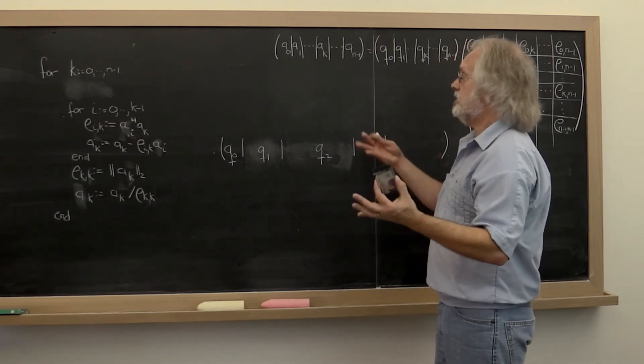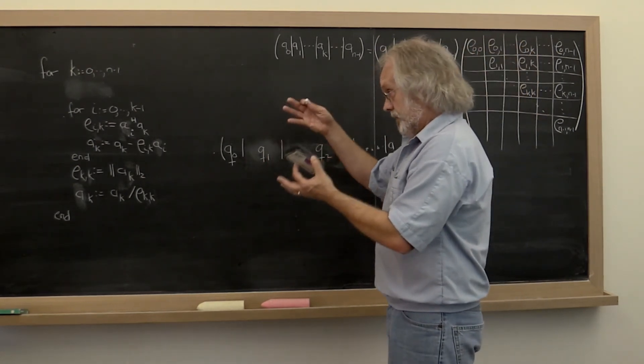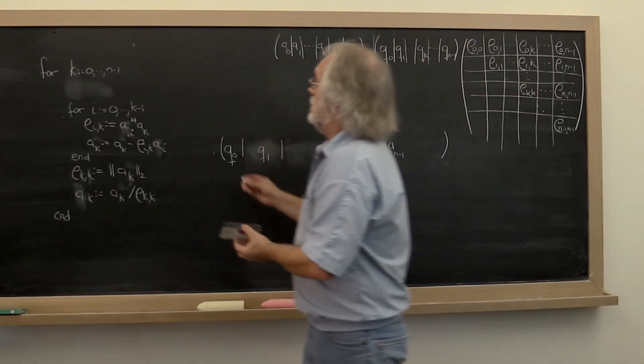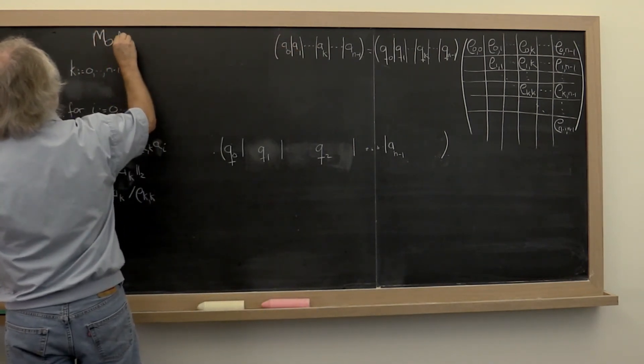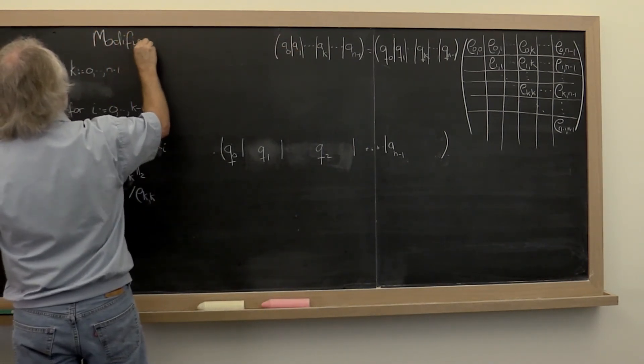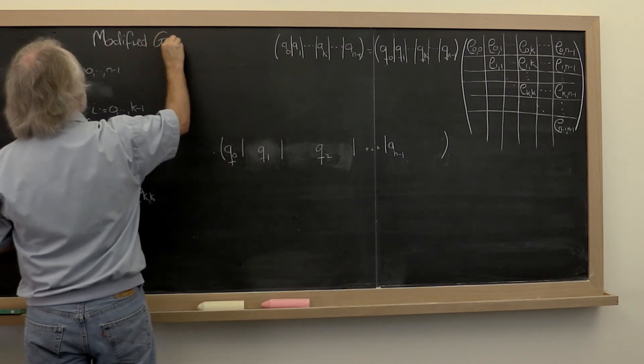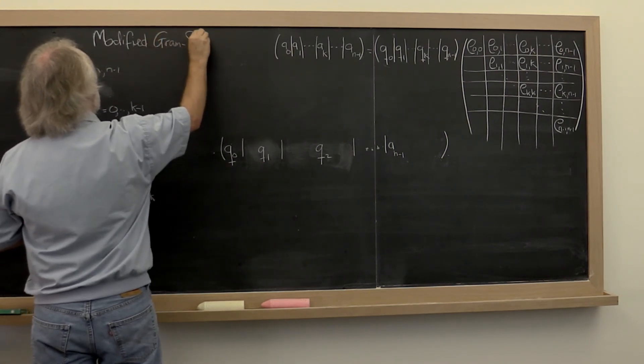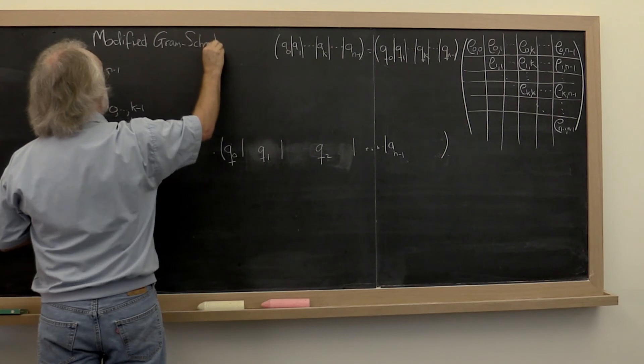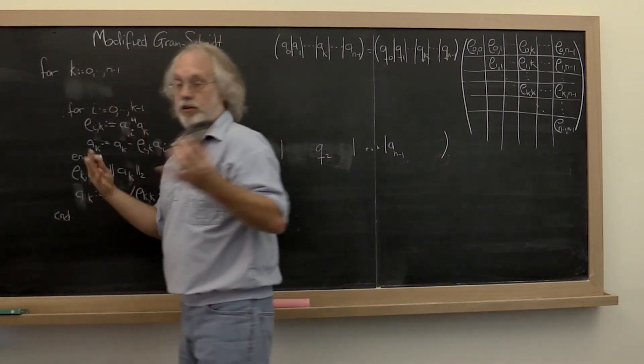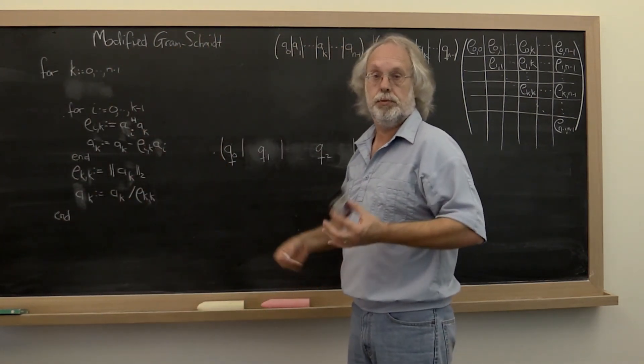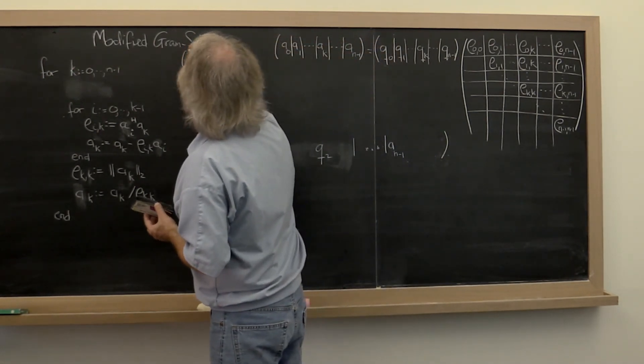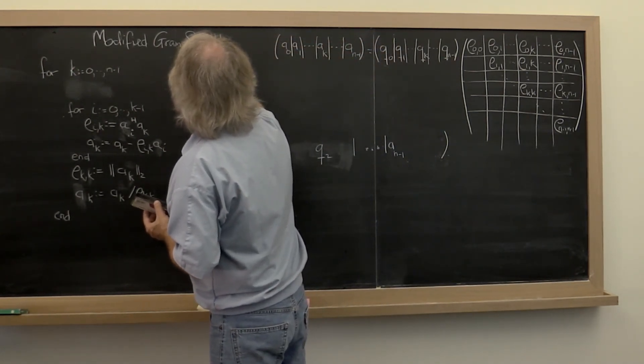Now this particular variation on Gram-Schmidt is known as the modified Gram-Schmidt method, or algorithm. People call it different things. Also known as modified Gram-Schmidt.